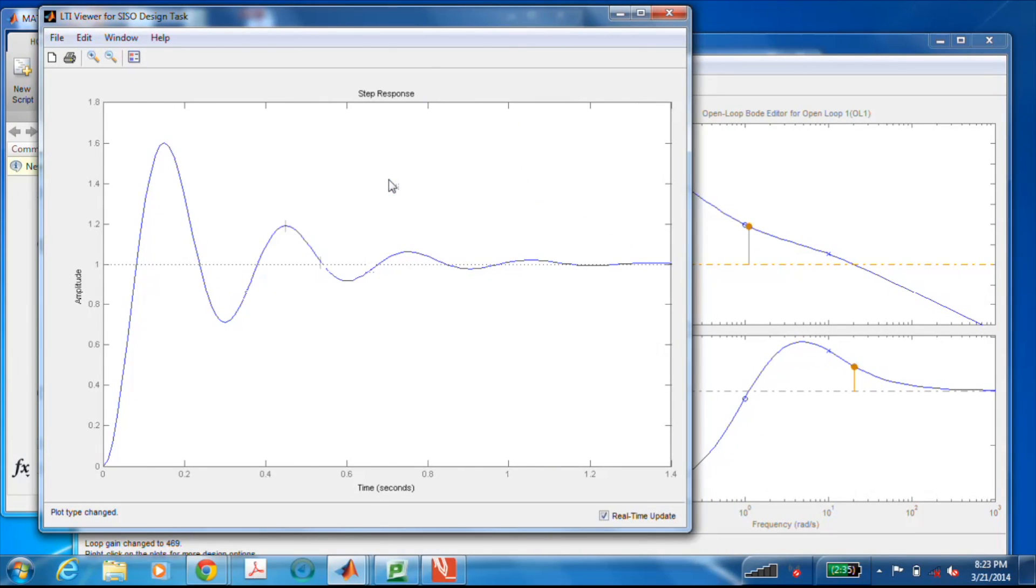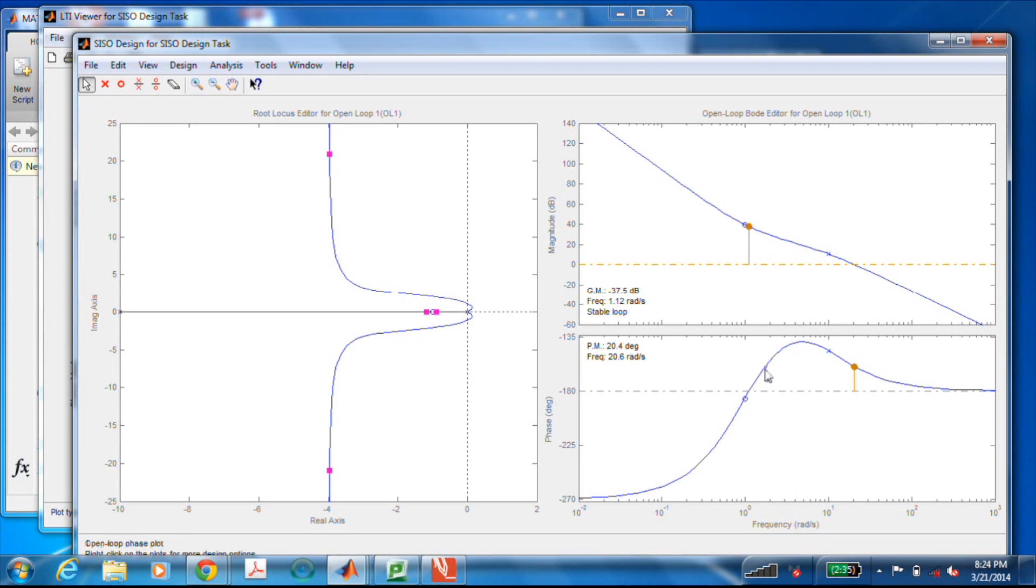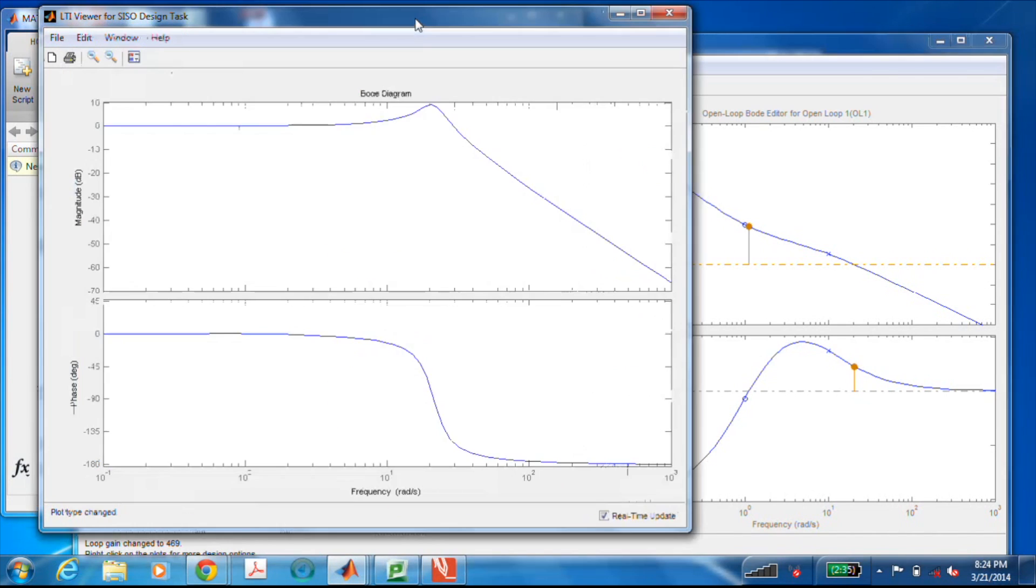If I go to plot types and pick Bode, now here is the closed loop Bode plot, and I'll find the 3 dB down point right about there. And there we are at a frequency of about roughly 30 radians per second. Again, estimated from the Bode plot of the loop transfer function and its gain crossover frequency. Great stuff.